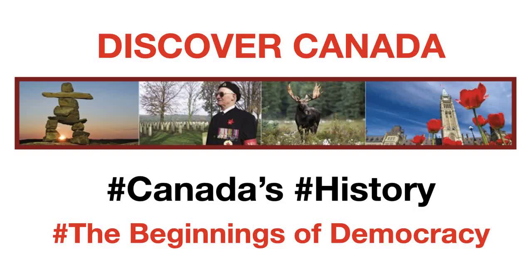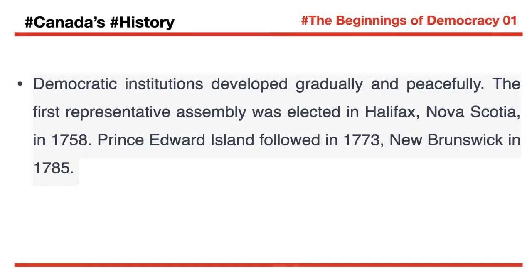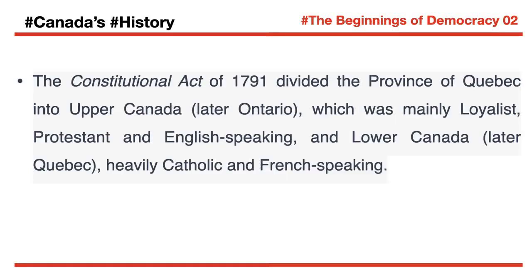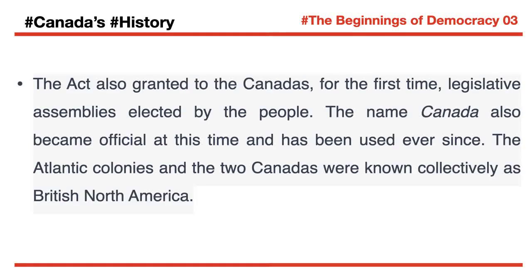Democratic institutions developed gradually and peacefully. The first representative assembly was elected in Halifax, Nova Scotia, in 1758. Prince Edward Island followed in 1773, New Brunswick in 1785. The Constitutional Act of 1791 divided the province of Quebec into Upper Canada, later Ontario — mainly Loyalist, Protestant and English speaking — and Lower Canada, later Quebec, heavily Catholic and French speaking. The act granted to the Canadas, for the first time, legislative assemblies elected by the people. The name Canada also became official at this time and has been used ever since.